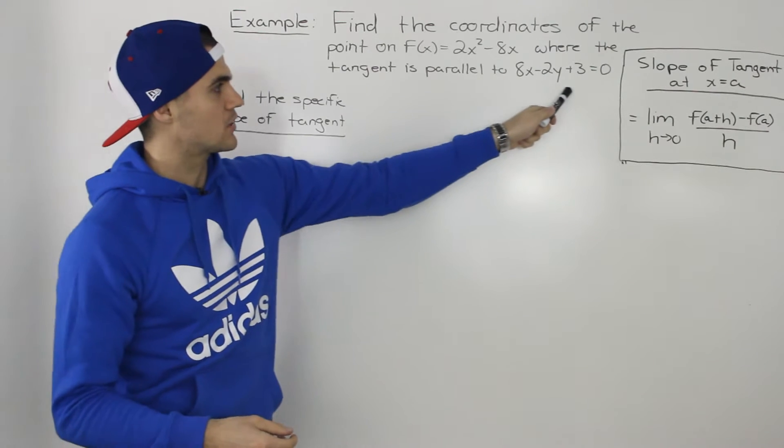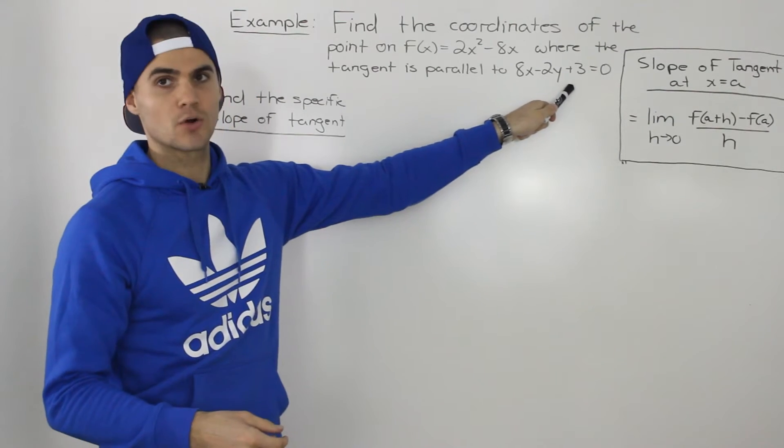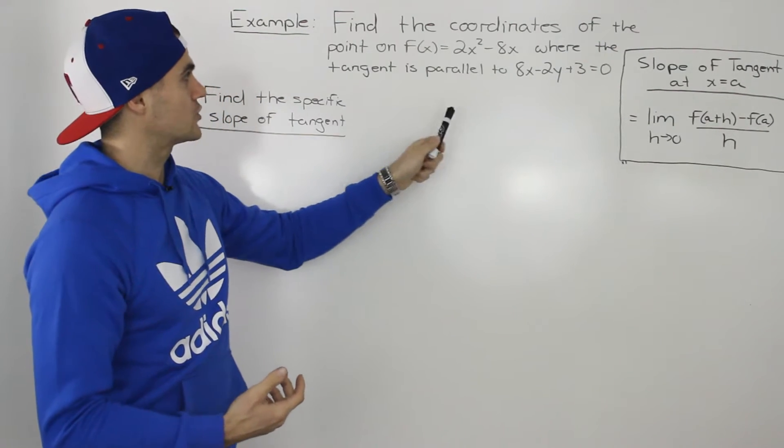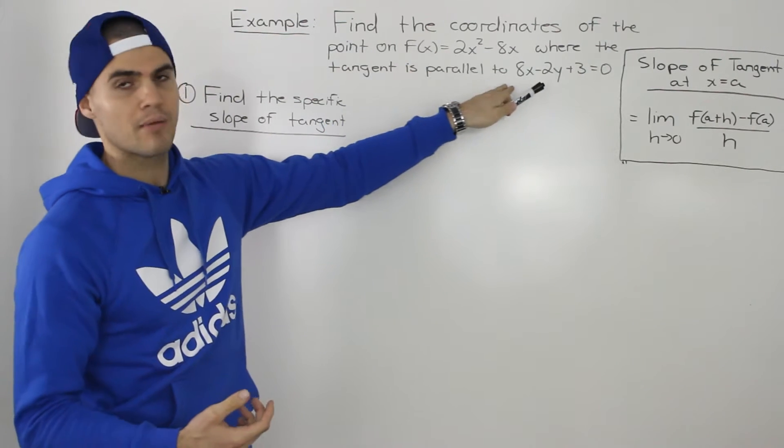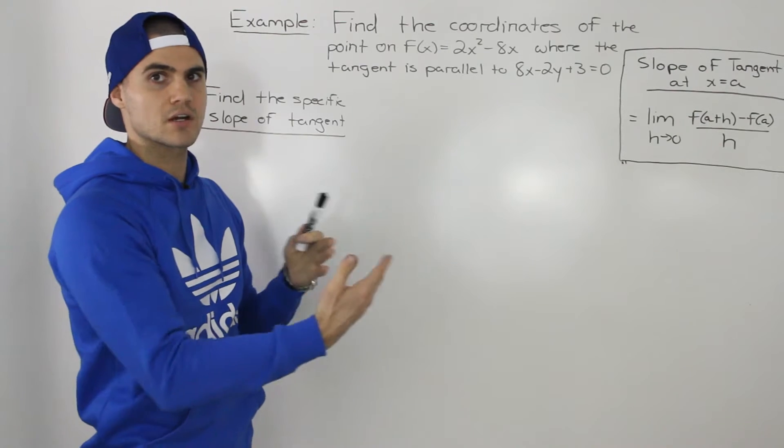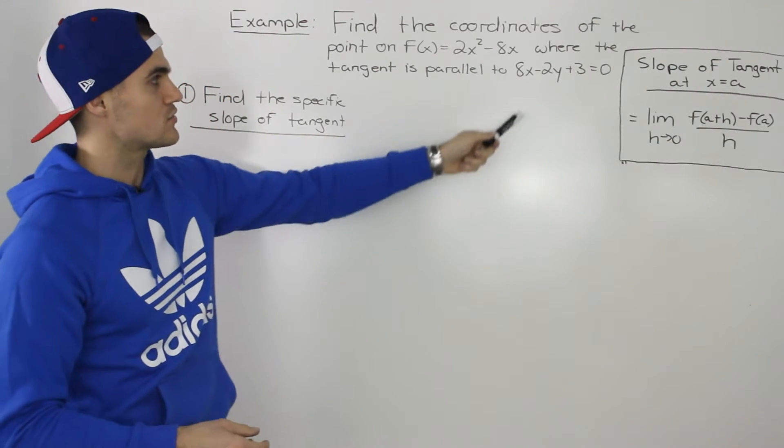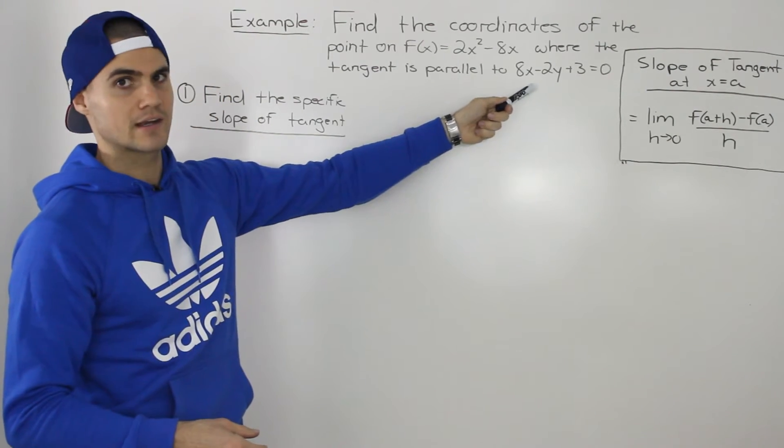And we can do that with this equation. Notice how this equation is the equation of a line, and we're told that the tangent we're finding on this function is going to be parallel to this line. So that means they're going to have the same slope.